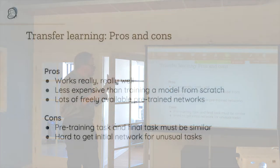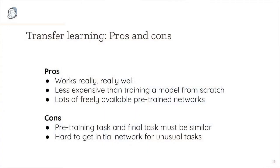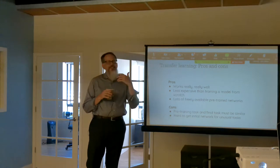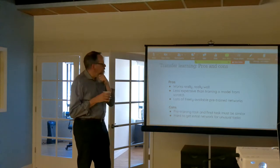Transfer learning pros and cons: it works really, really well and is much less expensive than training a model from scratch with random initialization and lots of data. There are also tons of freely available pre-trained networks. The cons are that the pre-training task and the final task have to be similar — pre-training on X-ray images and using that to classify cats and dogs probably wouldn't work well. And sometimes it's hard to get an initial network for unusual or non-natural-image tasks.